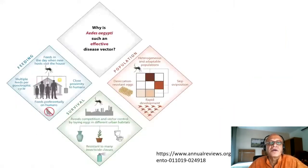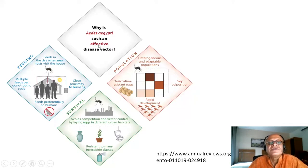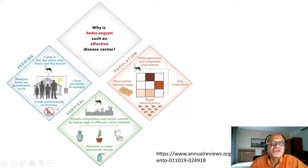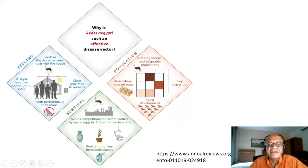A key question is: why is Aedes aegypti such an effective disease vector? A review paper schematic highlights key factors. It feeds during the day when hosts visit houses, maintains close proximity to humans, and takes multiple feeds per gonotrophic cycle. It feeds preferentially on humans rather than animals, and avoids competition and vector control by laying eggs across different urban habitats such as standing water, vegetation plots, and even flush tanks.